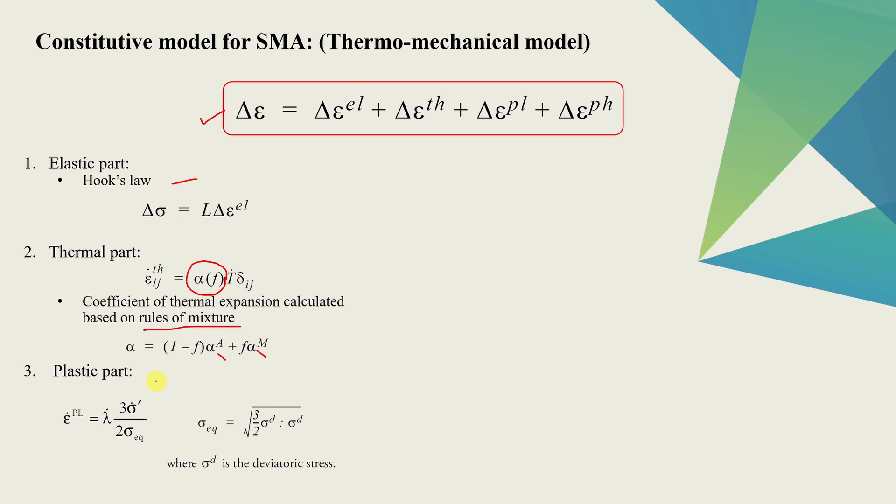Third part is plastic strain. And this evolves with the rules of plasticity. So we have to define yield surface and hardening rules, etc. And finally, the fourth part is something called transformation-related strain. This is the crux of SMA modeling. This strain actually occurs when martensite gets converted to austenite or austenite gets converted to martensite.